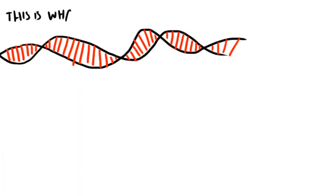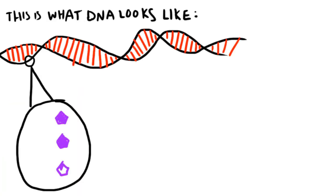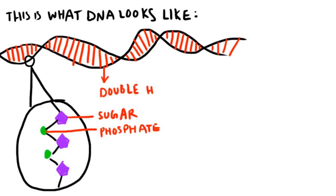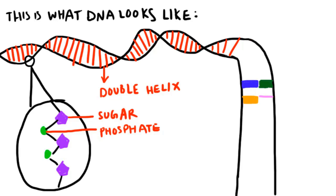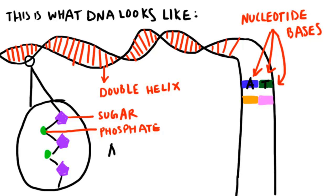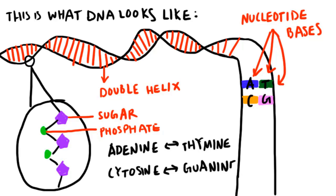This is what DNA looks like. It's made up of two strands of repeating units of sugar and phosphate that spiral around each other to form a structure called a double helix. If you unwound DNA, it would look like a ladder, where the rungs are made up of nucleotide bases. The four nucleotide bases are adenine and thymine, which are a complementary base pair, and guanine and cytosine, another complementary base pair.